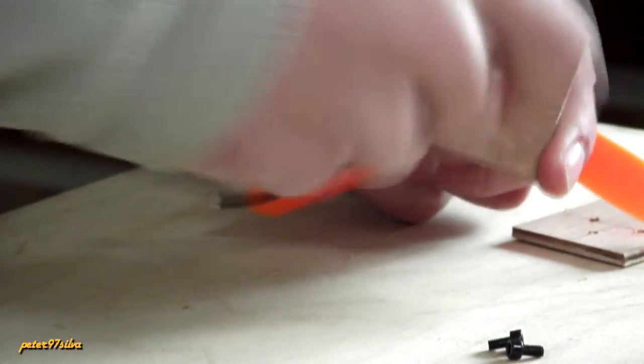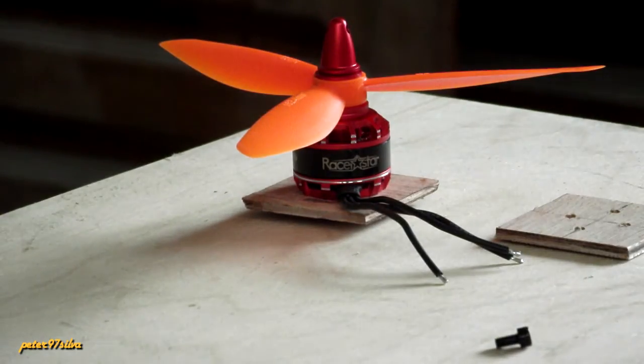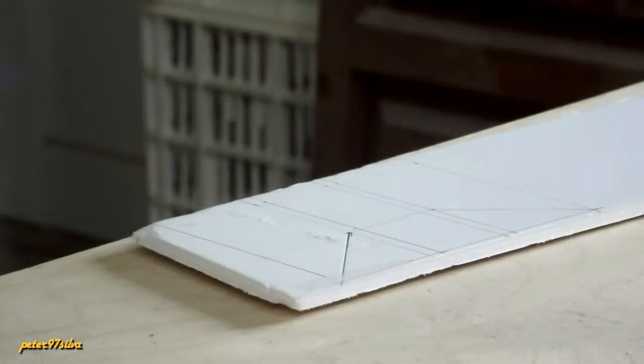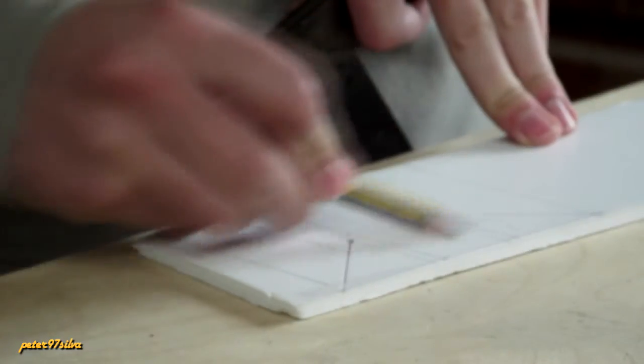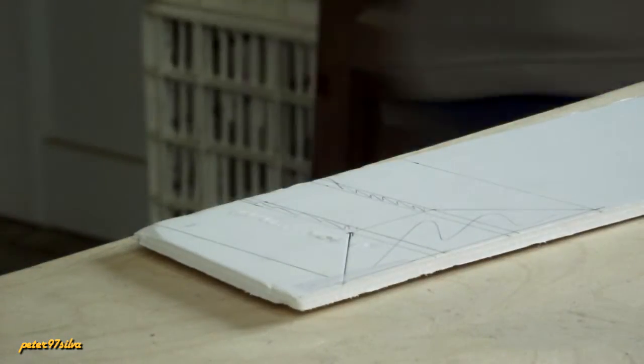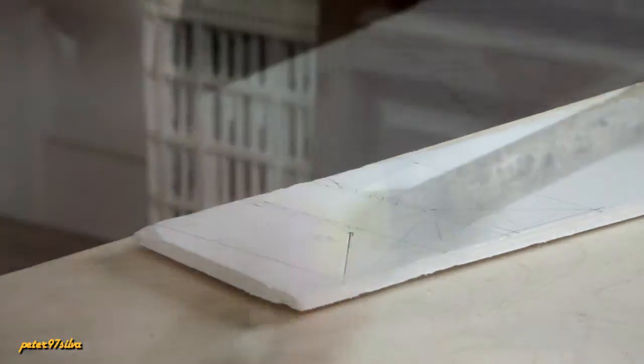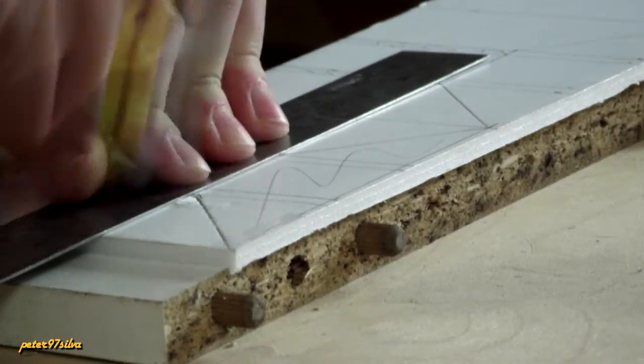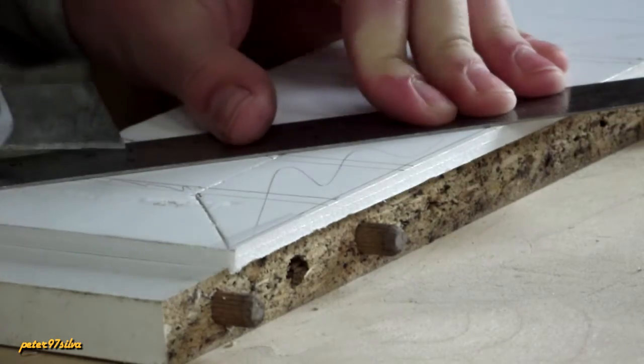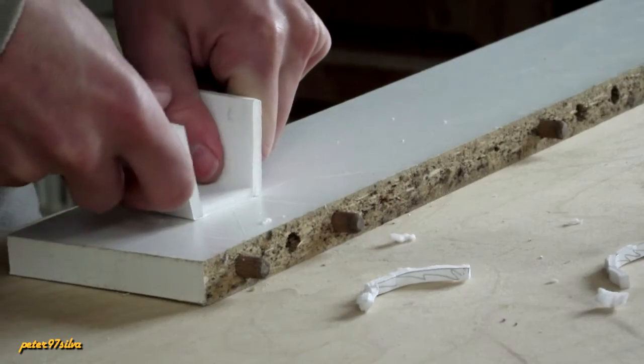If it fits, you can now start designing the piece that holds the firewall onto the wing from foam board. It's a pretty basic design, so you can recreate it and design your own. Just make sure the firewall fits there perfectly and sits straight on the wing. Now you can cut that to its shape.